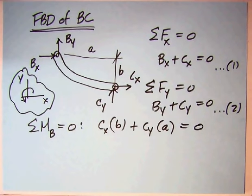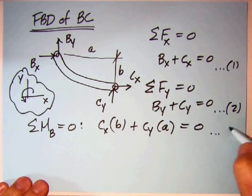If we do moments there, we're going to end up with two positive terms. We know one of them has got to be backwards, but right now, Cx times B plus Cy times A equals zero. That could be equation number three.